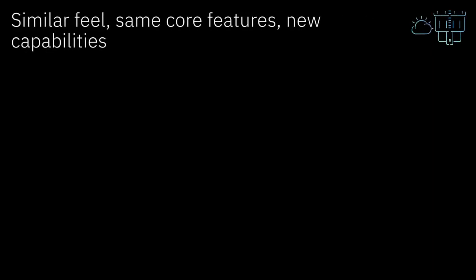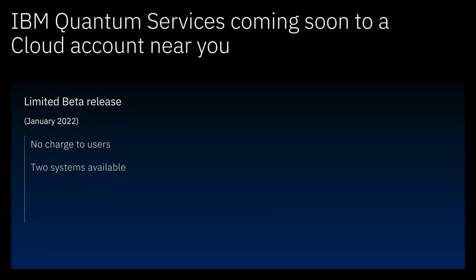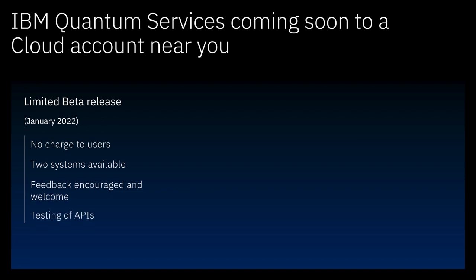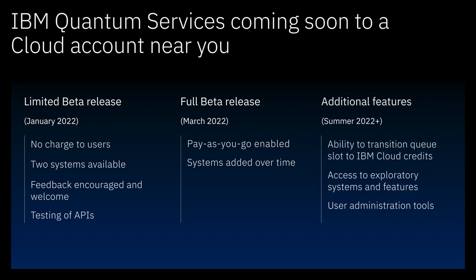What's changed? A lot. We've been exposing quantum systems on the internet for over five years, and we've learned a ton — and we're here to make this simpler and easier to use. All you have to do is create an instance, select a plan, and you are ready to execute your quantum workloads. We're starting in January with a limited beta release to get feedback from core users, so that when we get to March — our full beta — we will be comfortable turning on pay-as-you-go access. In summer, we're going to focus on understanding the type of workloads we support today and how they could potentially transition, and we'll allow you to look at IBM Cloud as a viable alternative to some of your existing agreements.